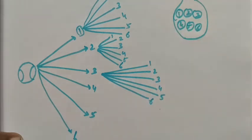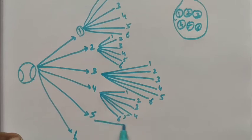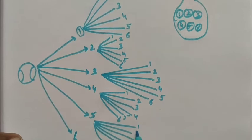If the first ball is number 4, the second ball may be 1, 2, 3, 4, 5, or 6. If the first ball is number 5, the second ball can be 1, 2, 3, 4, 5, or 6.